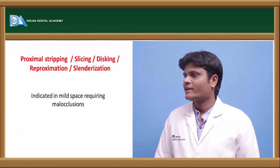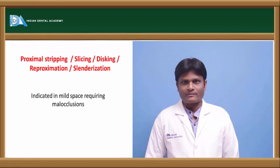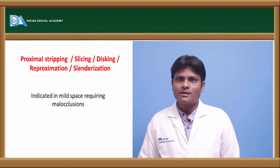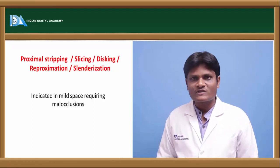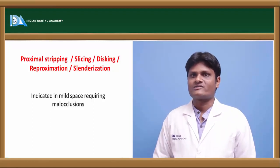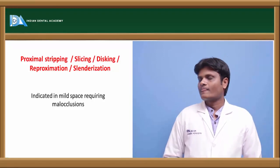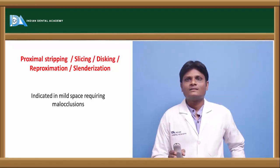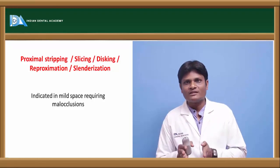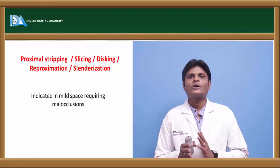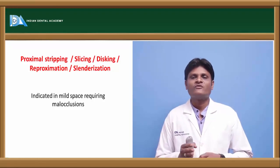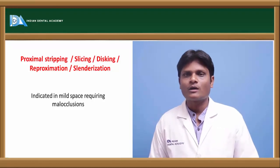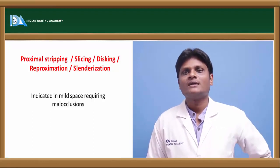The first method is proximal stripping, also called proximal slicing, disking, reproximation, or slenderization. By reducing the thickness of the enamel of the teeth, we obtain space that is ultimately utilized to correct crowding or proclination of the teeth.